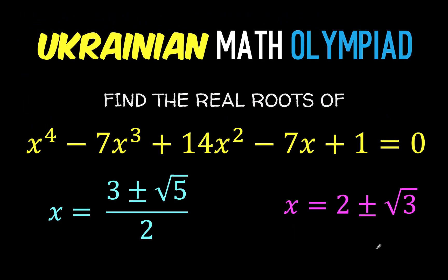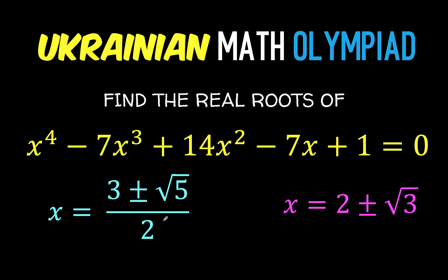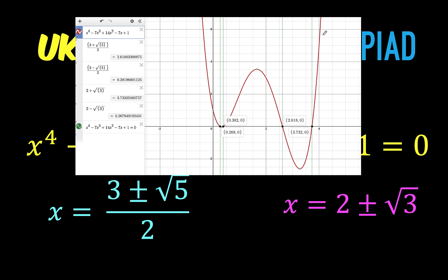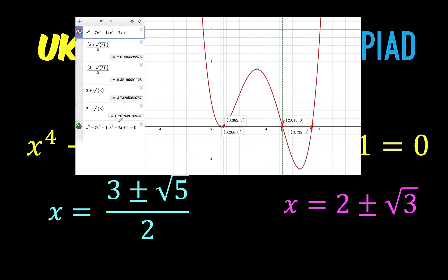Going back to our main problem, the four roots are: 3 plus the square root of 5 over 2, 3 minus the square root of 5 over 2, 2 plus the square root of 3, and 2 minus the square root of 3. On the graph, the four intersections correspond to these roots: approximately 2.618, 0.382, 3.732, and 0.268 respectively. These are the four roots of this quartic polynomial, and this problem is now solved.